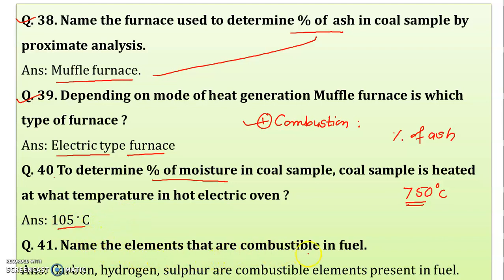Name the elements that are combustible in fuel. The combustible elements are carbon, hydrogen, and sulfur — these are present in the fuel. Nitrogen is a non-combustible element present in the fuel.